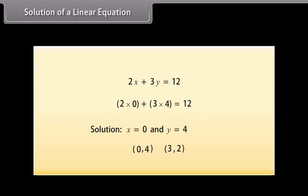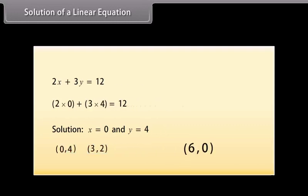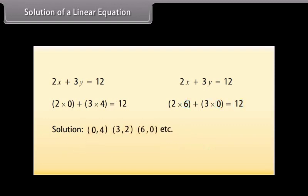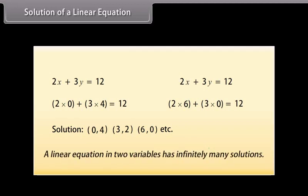We have found at least two solutions for this equation. Is (6, 0) also a solution? Yes — substituting X as 6 and Y as 0 gives 12. Similarly, many other solutions can be found from a single equation, and there is no end to the different solutions of a linear equation in two variables. Therefore, we can say that a linear equation in two variables has infinitely many solutions.